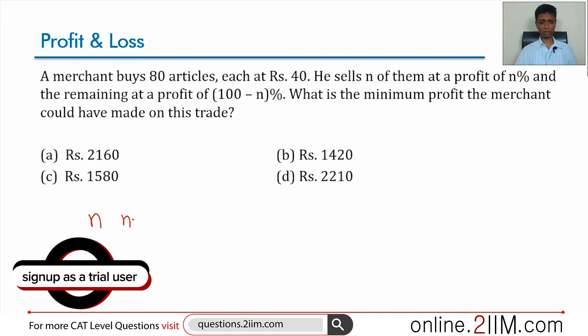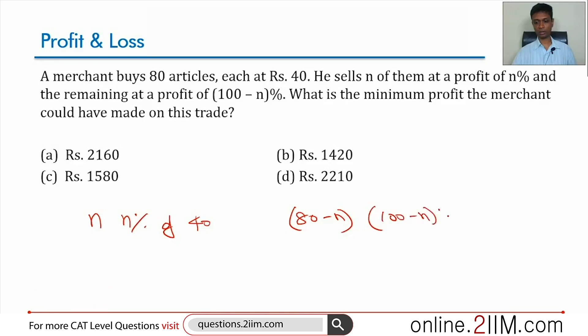That's n percent of 40. For the remaining—he buys 80 articles—so the remaining 80 minus n articles, he makes 100 minus n percent of 40.